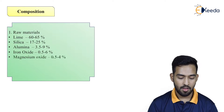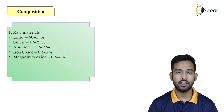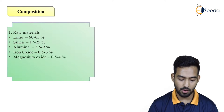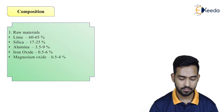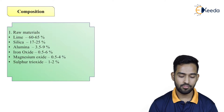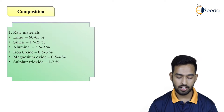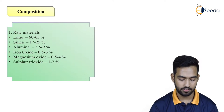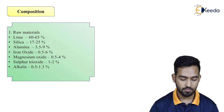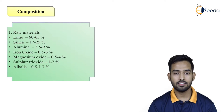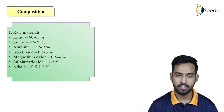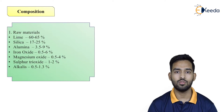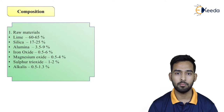Then we have magnesium oxide, which is about 0.5–4%, and sulfur trioxide, which is 1–2%. And last is alkalis, generally in the form of 0.5–1.3%.